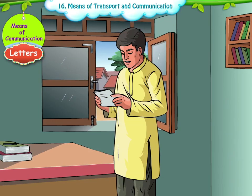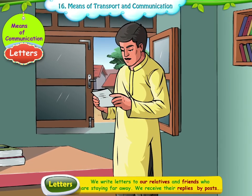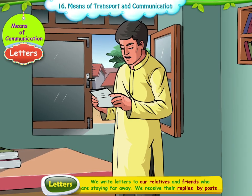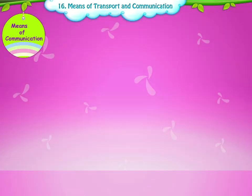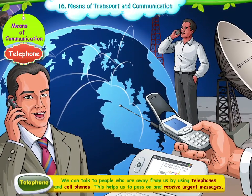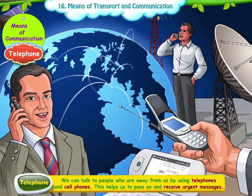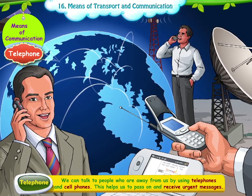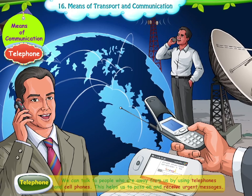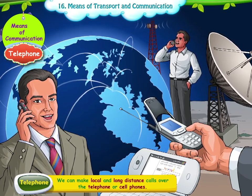The fourth means of communication is letters. We write letters to our relatives and friends who are staying far away, and we receive their replies by post. The fifth one is the telephone. We can talk to people who are away from us by using telephones and cell phones. This helps us to pass on and receive urgent messages. We can make local and long distance calls over the telephone or cell phones.